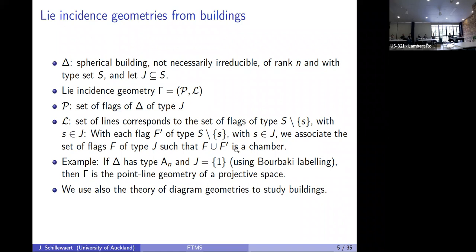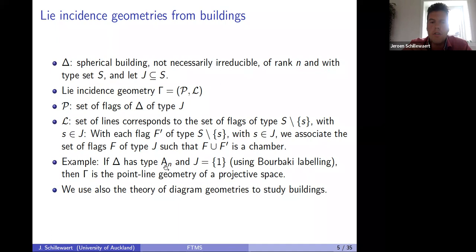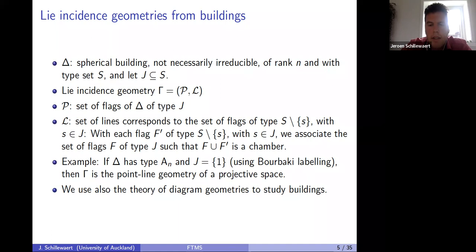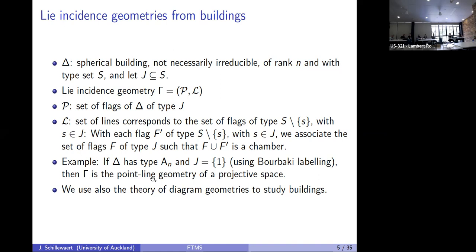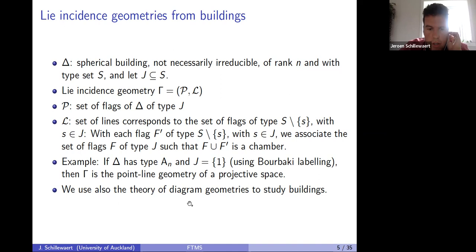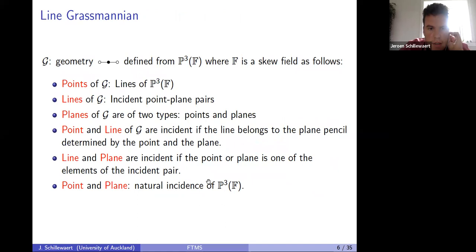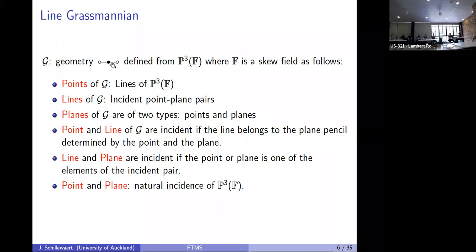As an easy example: if delta has type A_n — a simply-laced Coxeter diagram — and J is {1}, meaning you circle the first node, you get the normal point-line geometry of a projective space. Buildings of type A_n correspond to projective spaces, and circling the first node gives the normal geometry of projective space. If instead I take the second node in A_3, it comes from a projective space over a skew field, and we associate a different point-line geometry.